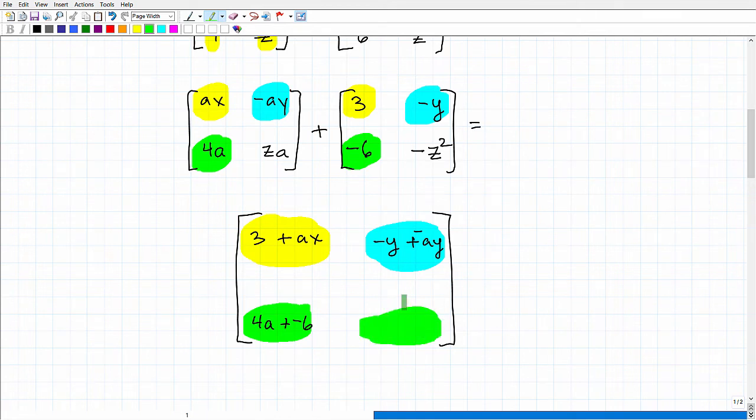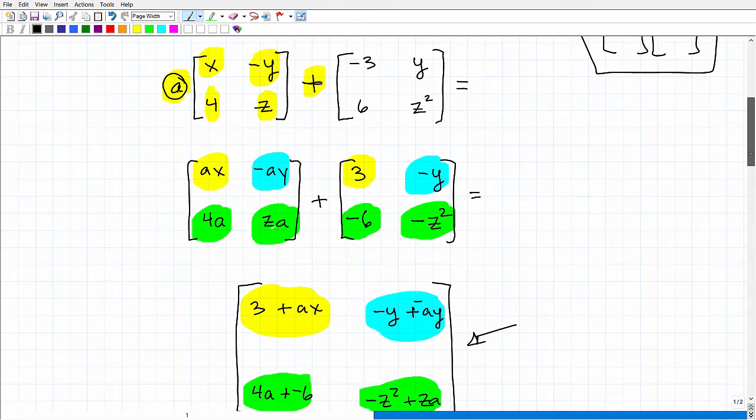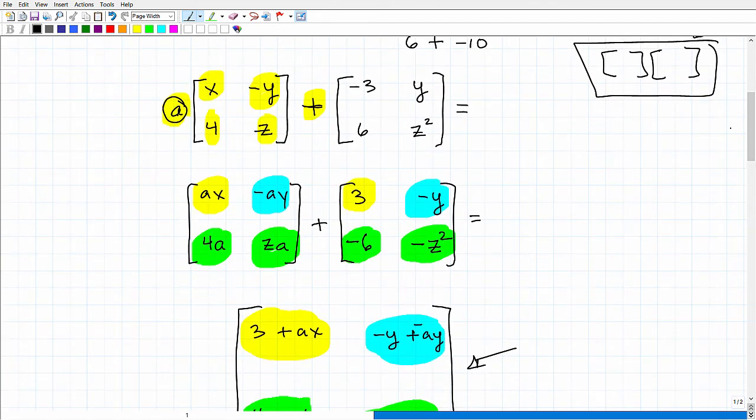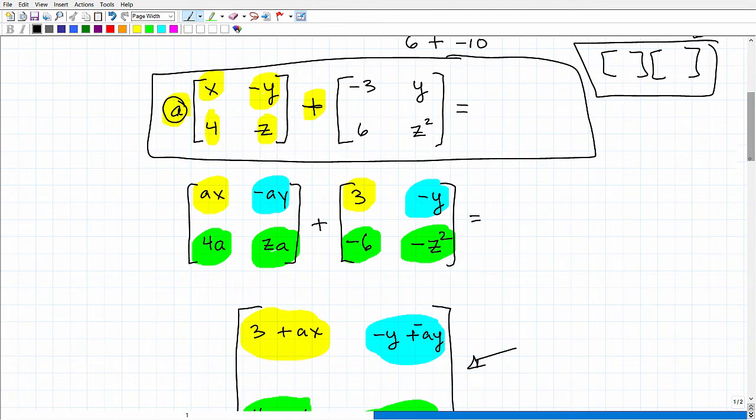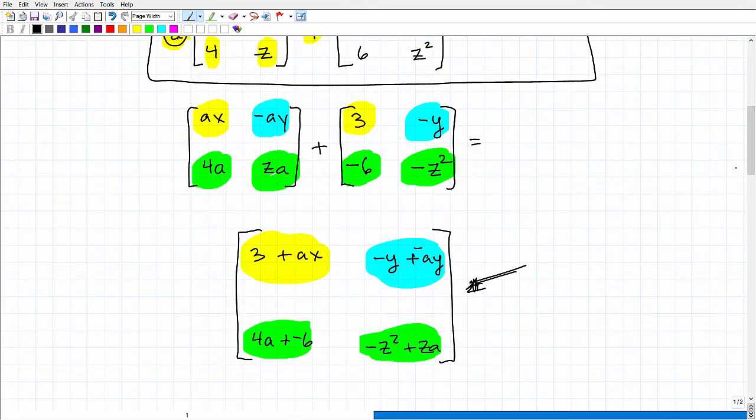And then last but not least, we have row 2, column 2, and that will be ZA and this negative Z squared. So we'll write it this way, negative Z squared plus ZA. Again, we can have the orders flipped. They're both mathematically equivalent. And this is the sum, OK, or this is, this right here, simplified, is this. That's what we wanted to do, all right? So we have to first, obviously, do our scalar multiplication, which we did. And then we're going to go ahead and add the matrices.